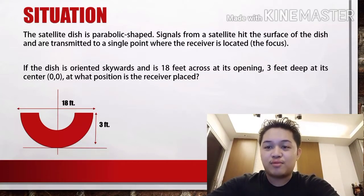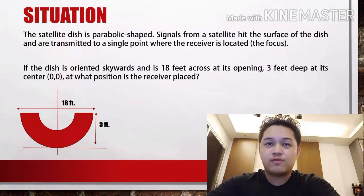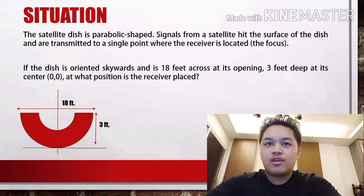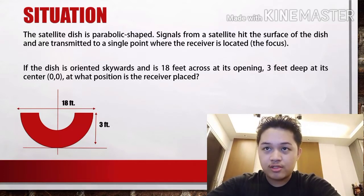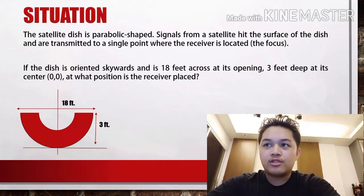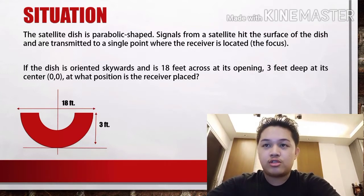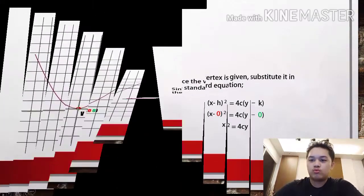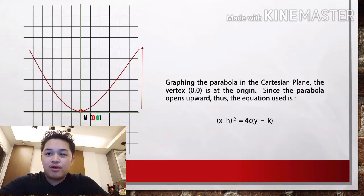The satellite dish is a parabola-shaped — signals from a satellite hit the surface of the dish and are transmitted to a single point where the receiver is located. If the dish is oriented skywards and is 18 feet across at its opening, 3 feet deep at its center, at what position is the receiver placed? Since the vertex is given, substitute it in the standard equation. Graphing the parabola in the Cartesian plane, the vertex is at the origin.